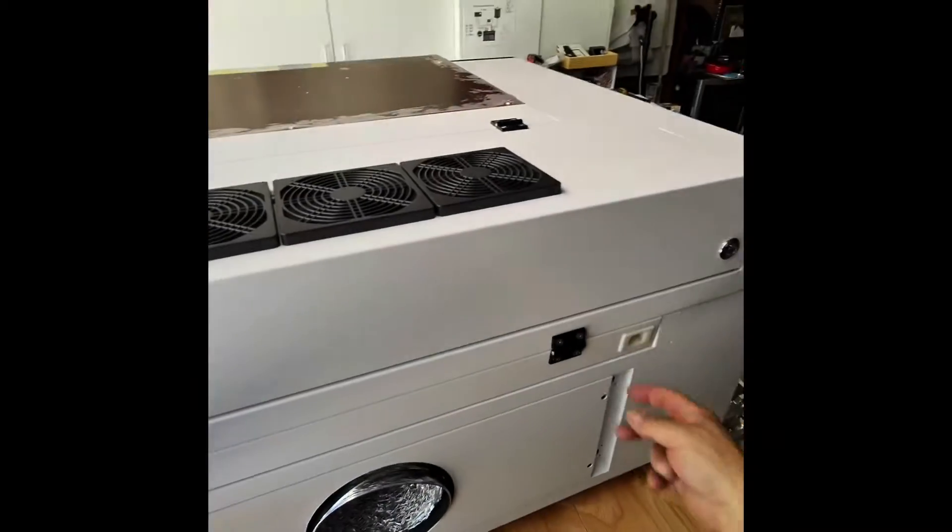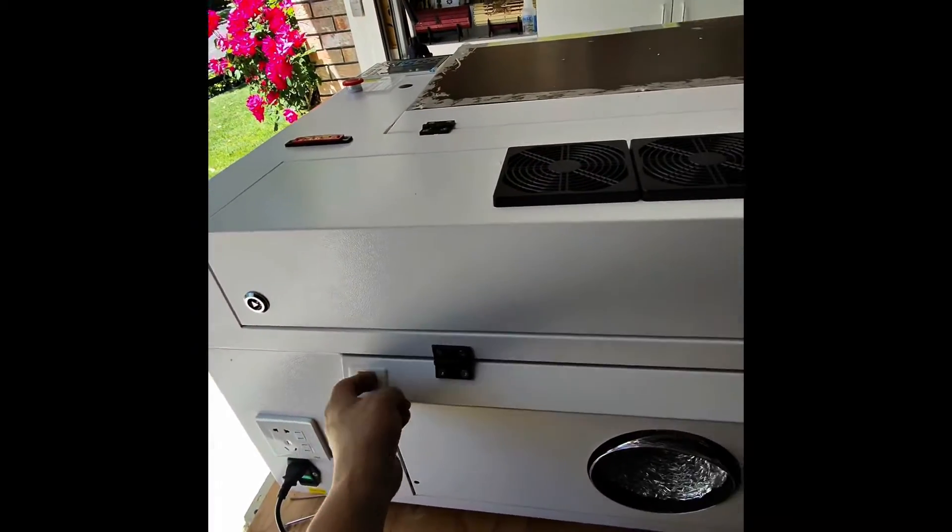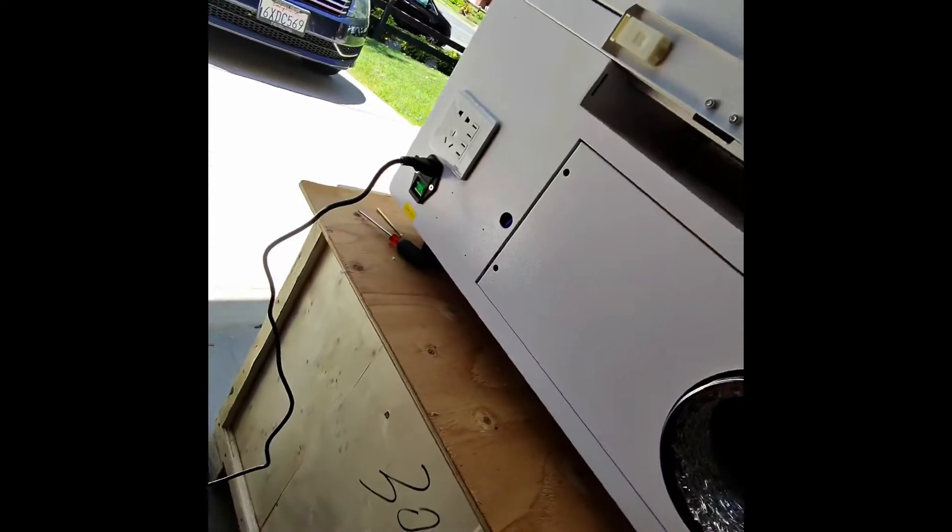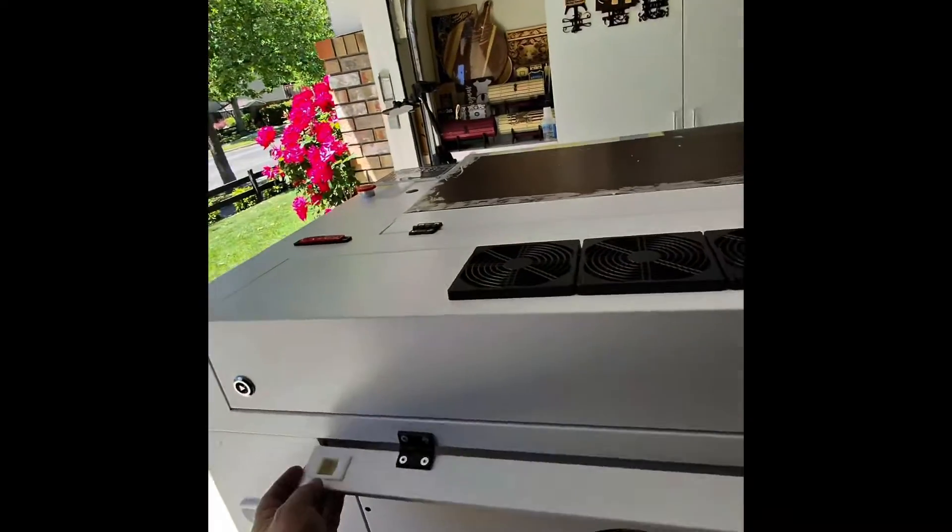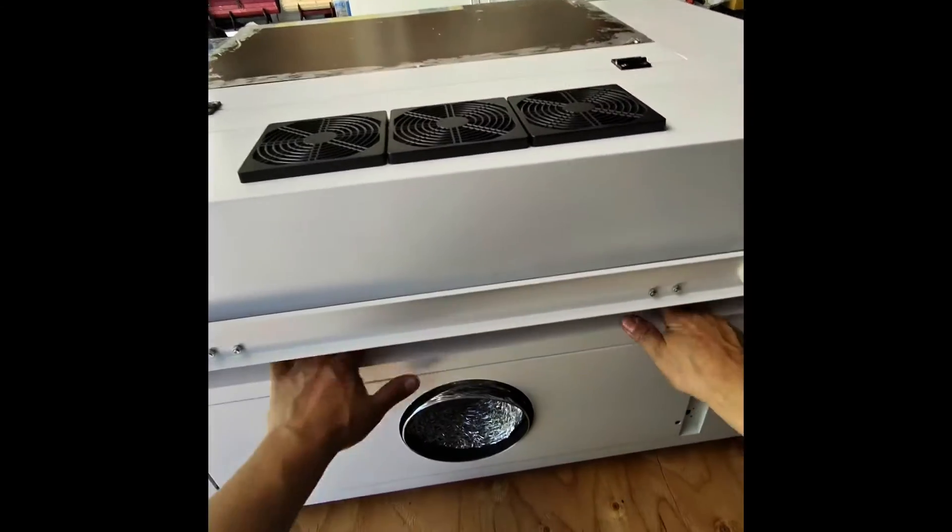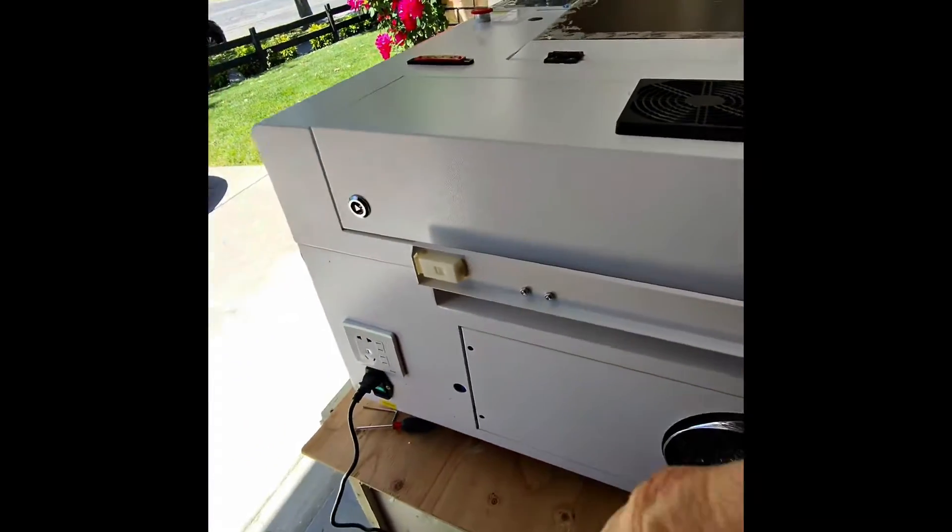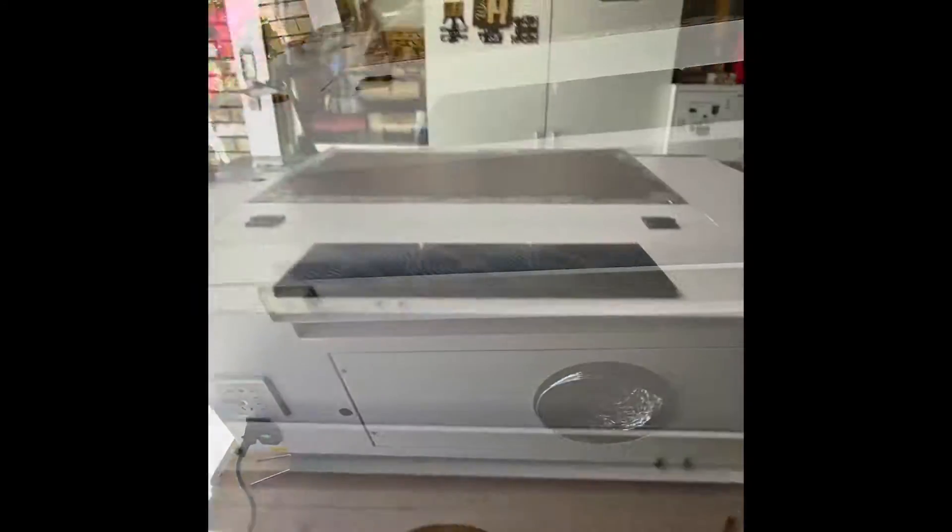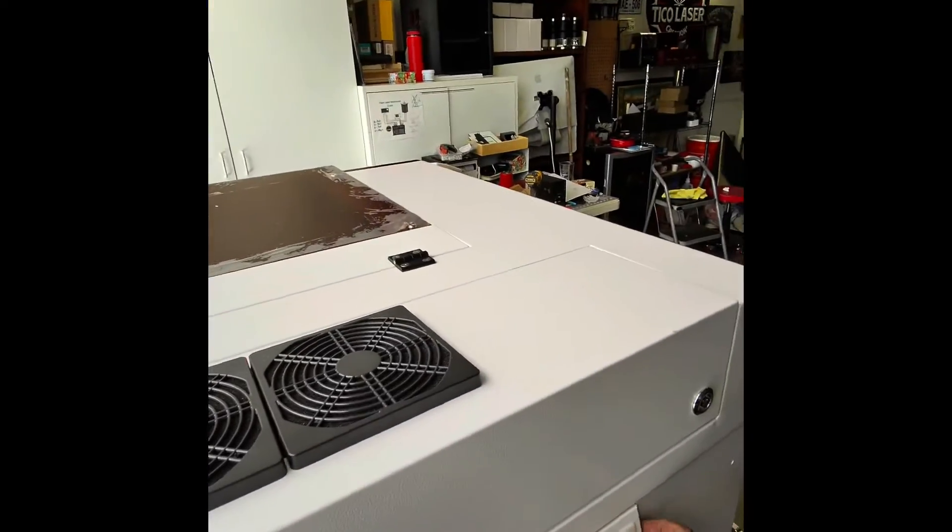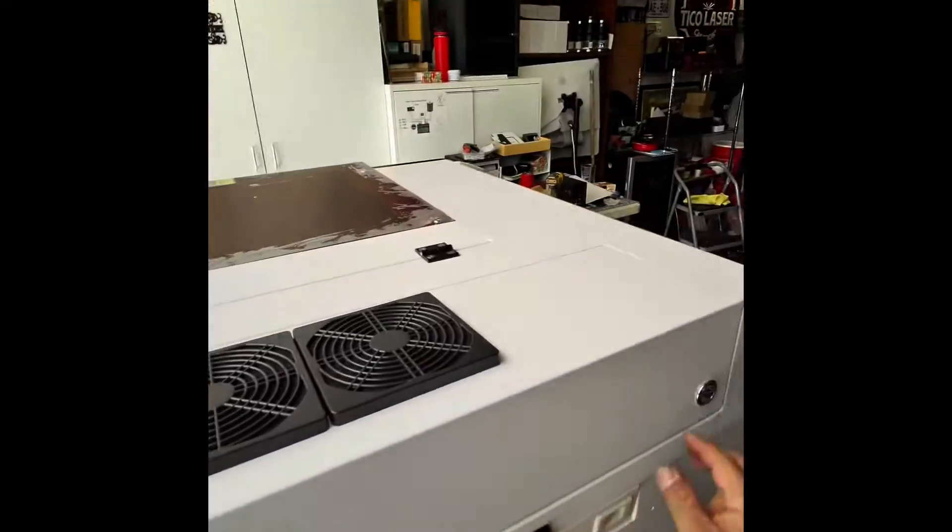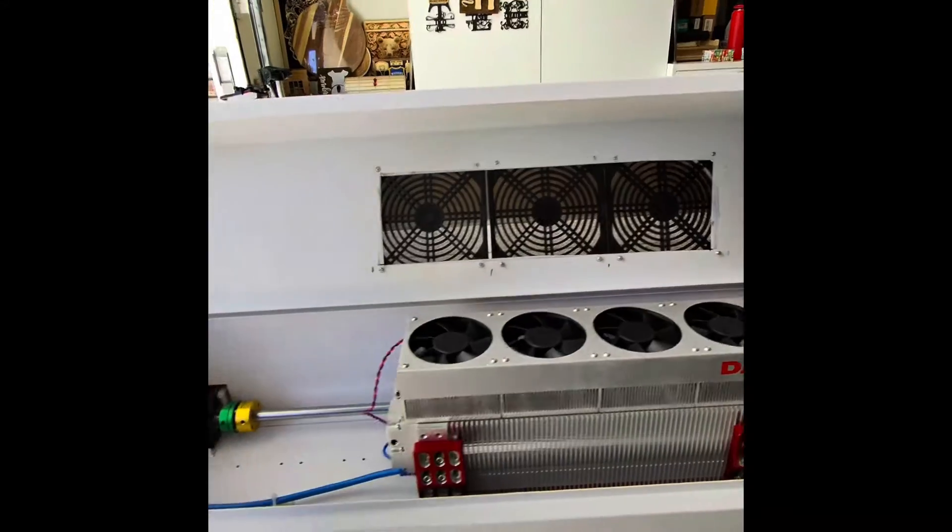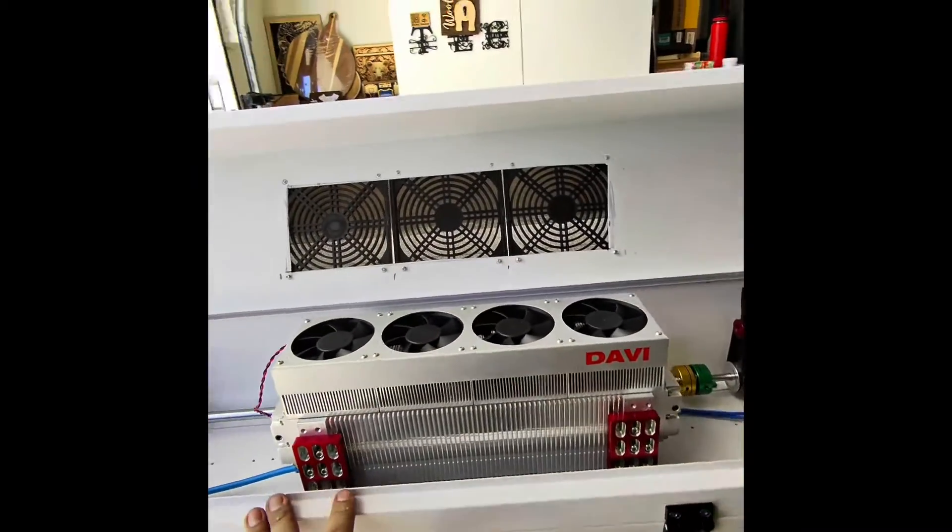We have a couple of things here going on. We have the pass-through gate that opens up and it stays up nicely in there, so you can have your material go back through the machine. Also here we have the access to your laser unit. This is your laser tube, this is a metal laser tube, air cooled.